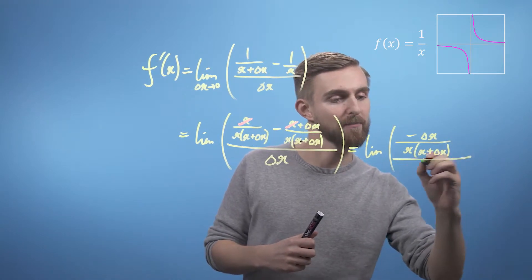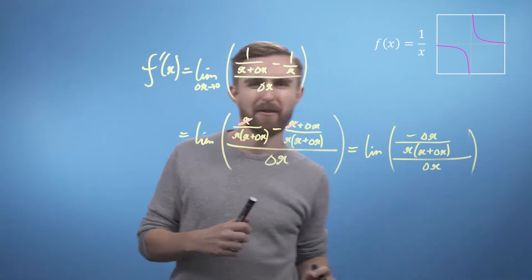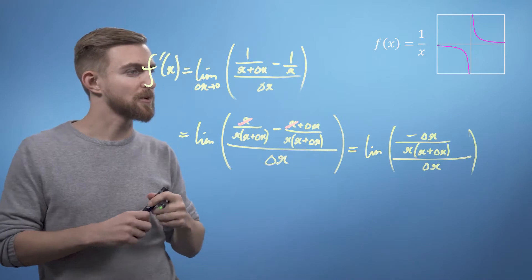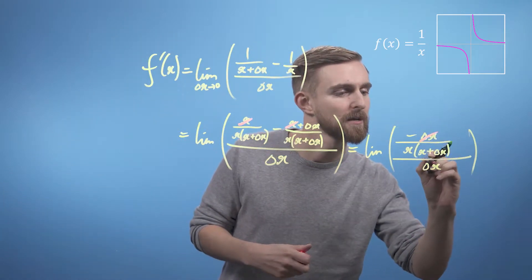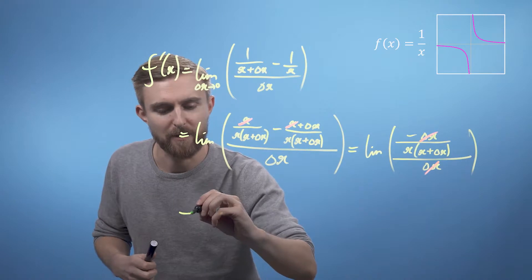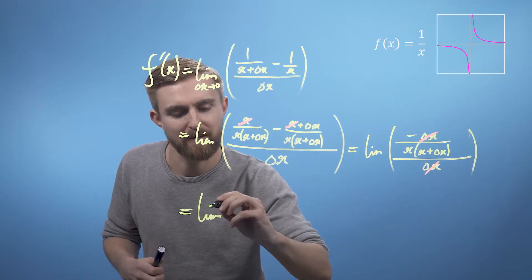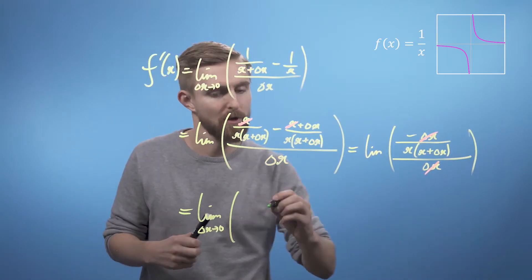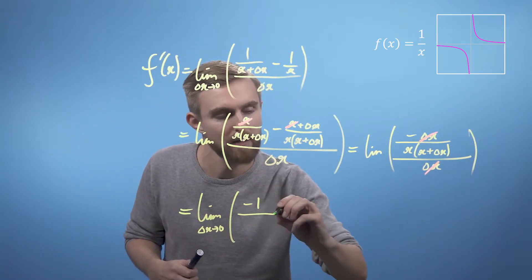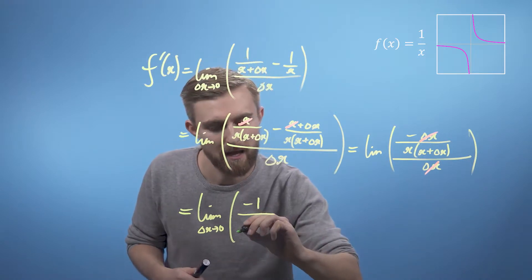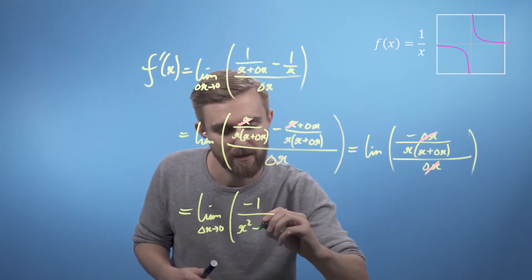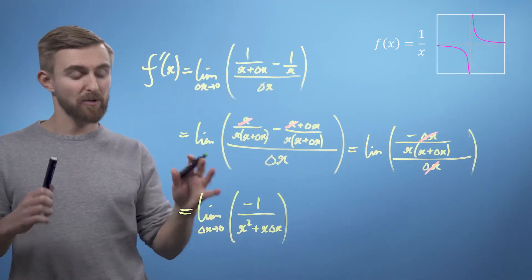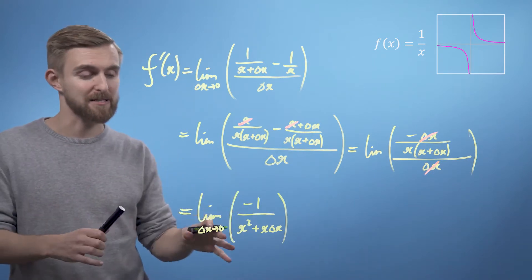So we can say this thing is going to be the limit of minus delta x divided by x brackets x plus delta x, all divided by delta x. At this point you can see that you've got a delta x at the very top and a delta x at the bottom, so these two terms cancel each other out. And what you're left with is the limit as delta x goes to zero of minus one divided by x squared, opening up the bracket, plus x delta x. This is where the magic of limits comes into play.